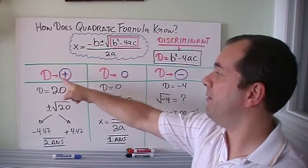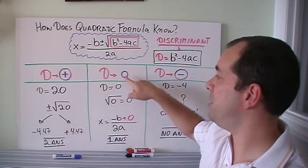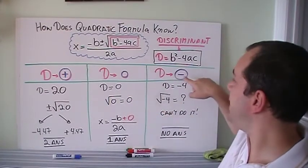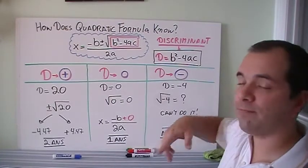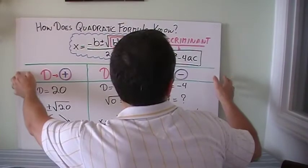But again, just drop the imaginary things, I'm not asking you. If it's positive you're gonna get two answers, two real roots. If it's zero you're gonna get one answer, one real root. And if it's negative then you can't do it, so you're gonna have no answers.